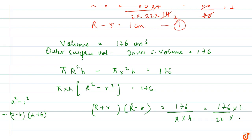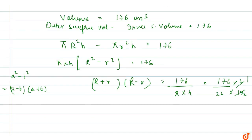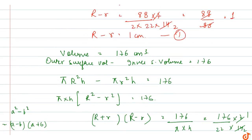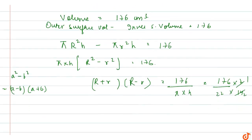Substituting h = 14 from the given data, we get R plus r multiplied by 1 equals 176 divided by 44, which gives R plus r equal to 4 cm.